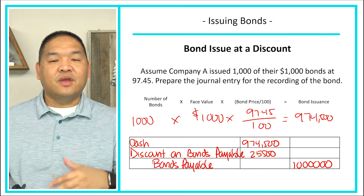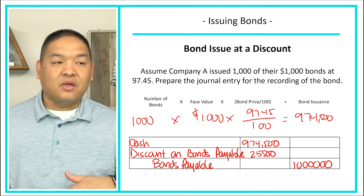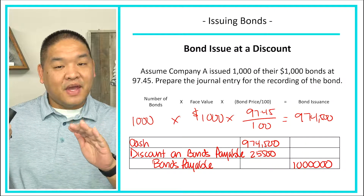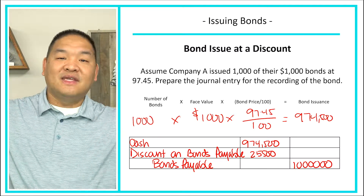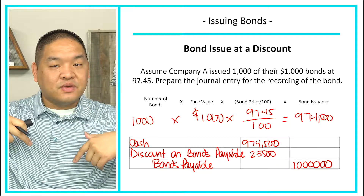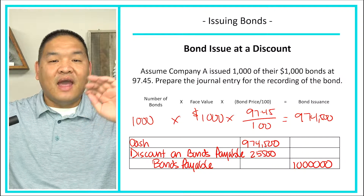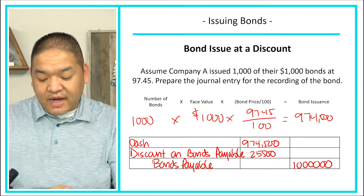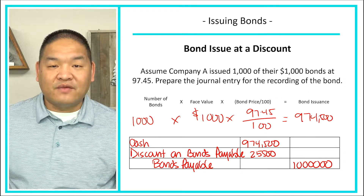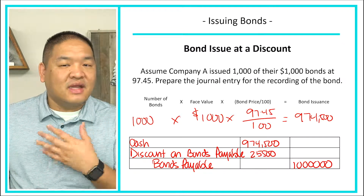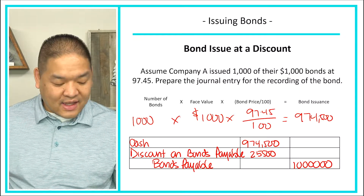Effectively, we're going to have to come up with a little more money than we borrowed — not only to pay the interest, but also to cover this $25,500 discount. We have to pay $25,500 because the market is giving 6% and we're only offering 4%. That additional $25,500 makes up the difference between what we received and what we'll have to pay back — it's basically additional interest cost for us. That's the bond issued at discount.